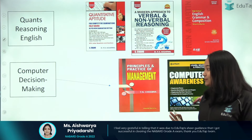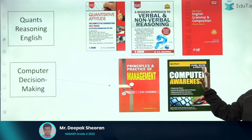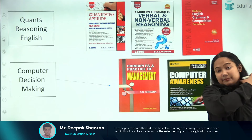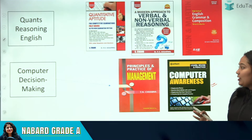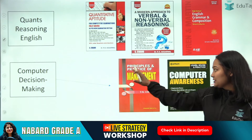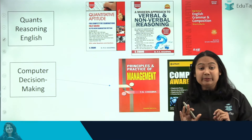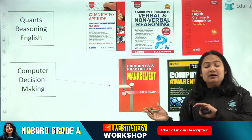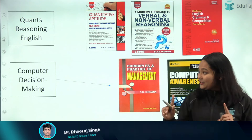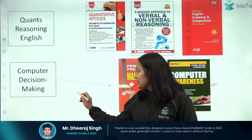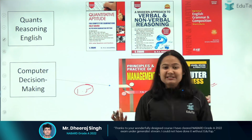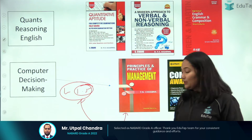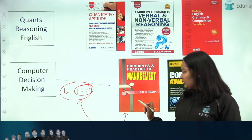For computer and decision making, there are two books. For computer, I would highly recommend Arihant — because a large portion of that section is directly covered by this book. For decision making, I'm saying you can refer to 'Principles and Practices of Management,' which is a great book, but it covers much more than what the exam asks. If I talk about the decision making cutoff, it is around 1.5 to 7.5 marks. To score that much, you don't need to refer to a multi-page book.